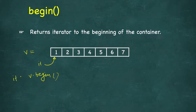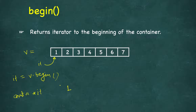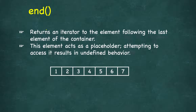It is pointing to the first element, so we can dereference it and print it. If we print this value it should print 1, and we will see a running code with these functions. begin simply points to the first element — the beginning of the container. Similarly, we have end, but unlike begin it does not point to the last element.